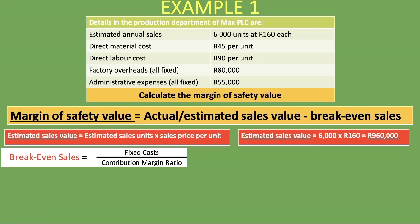Now we need to calculate our contribution margin ratio. We take our contribution divided by sales to get the contribution margin ratio, and then we can calculate our break-even sales. Another way is to take fixed cost divided by contribution, then multiply that answer by the selling price per unit. So let's calculate the contribution: sales minus variable cost. Our sales is 160 rand, and our variable costs are direct material and direct labor.